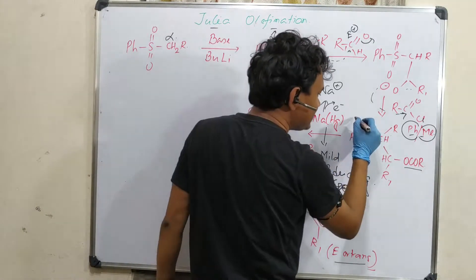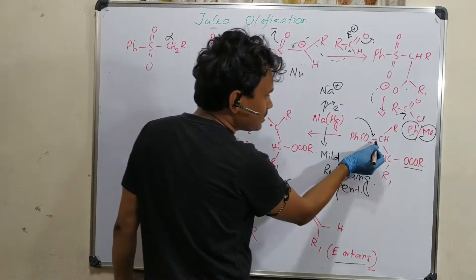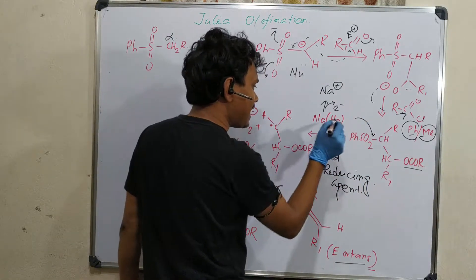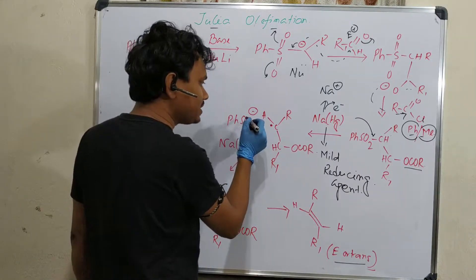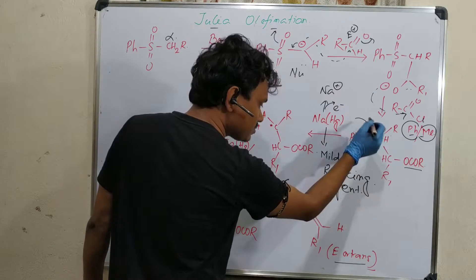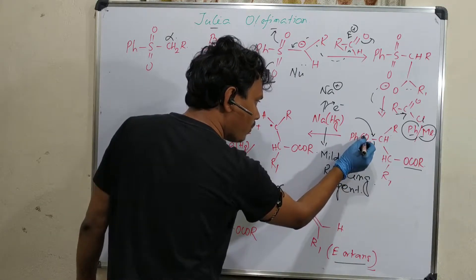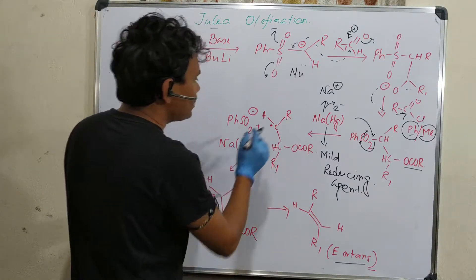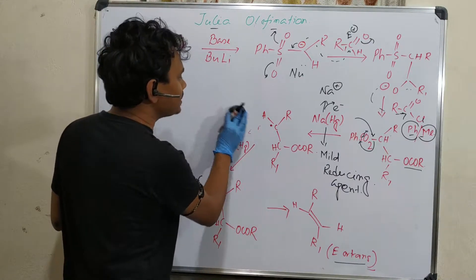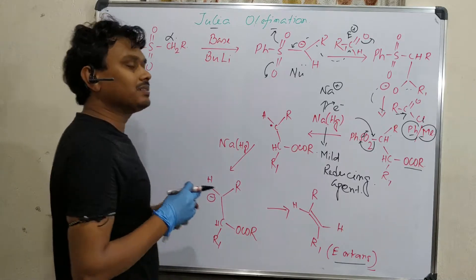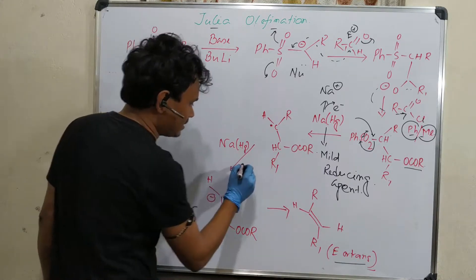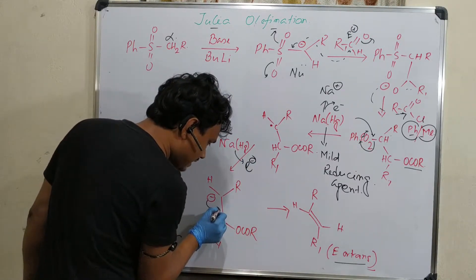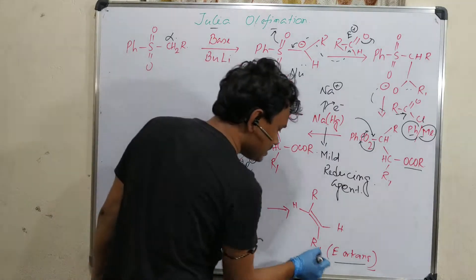If one electron is given, this electron goes to this bond. This bond cleaves and produces a radical here and anion here. Sulfur is reduced because this SO bond breaks and produces a single bond. Now this radical takes another electron from sodium amalgam to produce this anion.